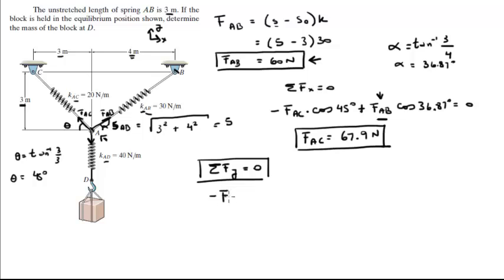FAD is coming down so it's negative. Minus FAD plus FAC times the sine of 45 degrees plus FAB times the sine of 36.87 degrees. And that is equal to 0. But we already have FAC and FAB. We found them right here. So you plug them in and solve for FAD. And you get that the force developed in the spring FAD is 84 newtons.